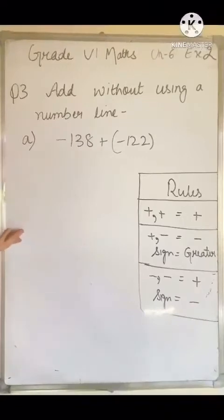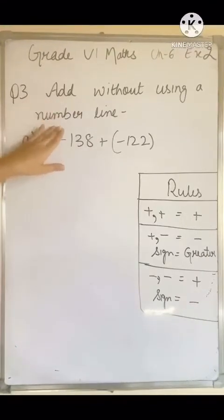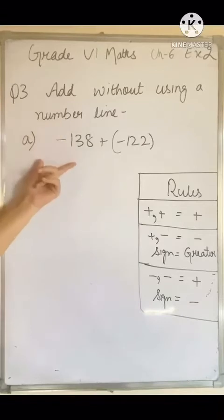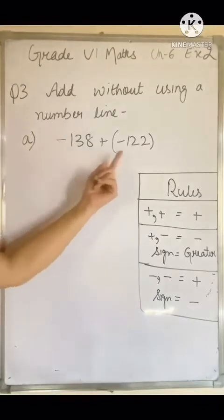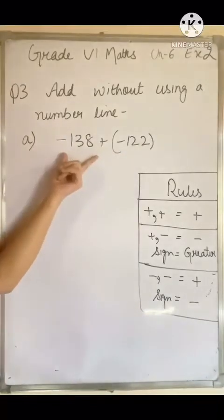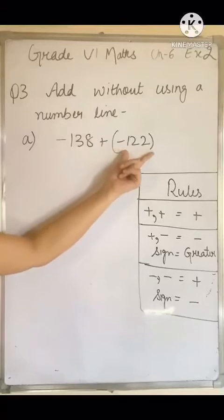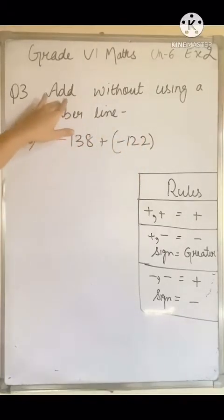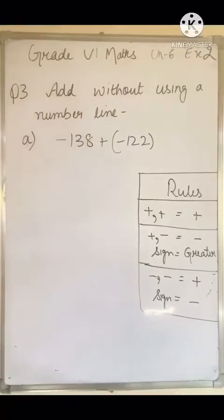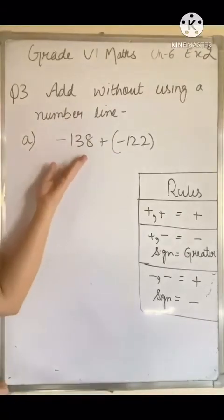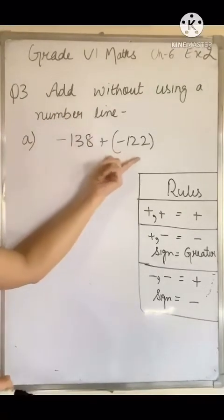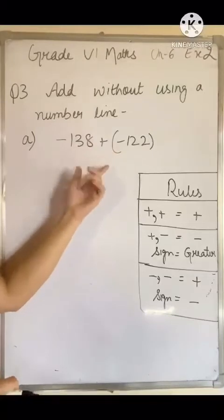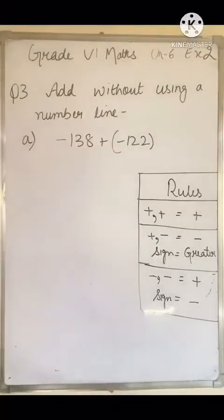Let's start with question number 3: add without using a number line. Here we are given two integers — the first one is negative and the second one is also negative — and we need to add them without using the number line. Whenever we perform addition between positive and negative integers, we always follow three rules.